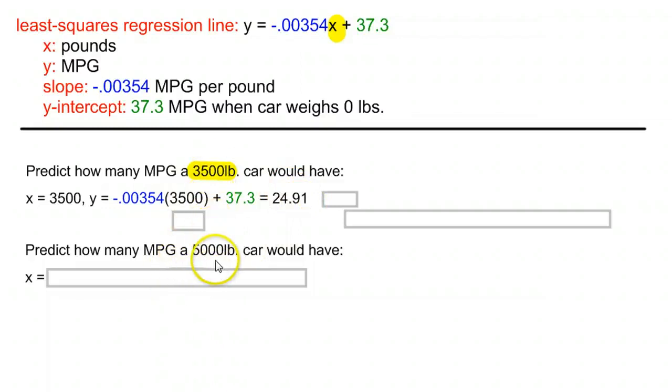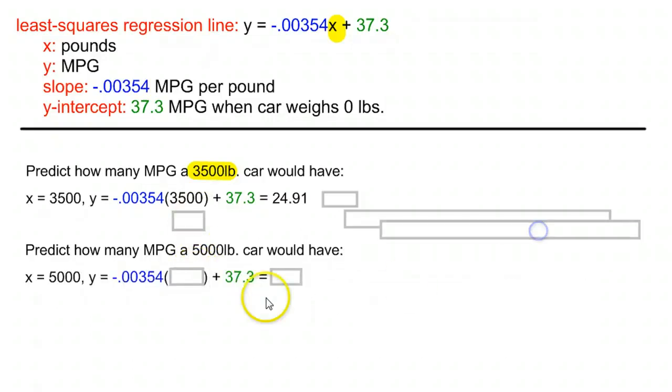Same idea with a 5000 pound car. If we had a 5000 pound car, that's quite the heavy car, we would plug it in for x. So we have our equation, plug in 5000 for x, and when you calculate it out, you get 19.6.